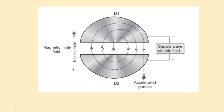This is the picture — you can see it. These are the Ds; they resemble the English letter D, and you are applying an electric field between the gap. These are the Ds and a magnetic field. Here, the magnetic field and electric field are acting perpendicular to each other.